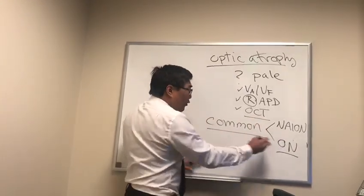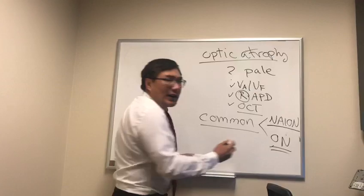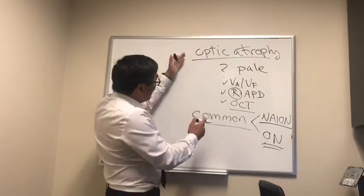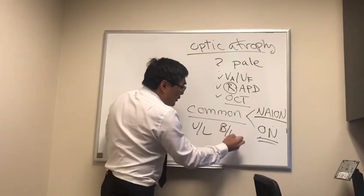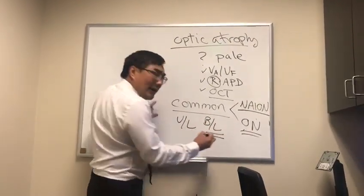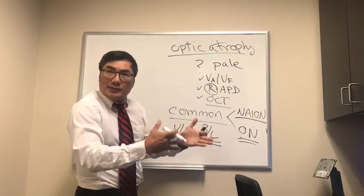If we don't have any evidence of NAION or optic neuritis in the past, and we just have optic atrophy, we'd like to know is it unilateral or bilateral. In patients who are bilateral, that usually means there's a systemic process going on.